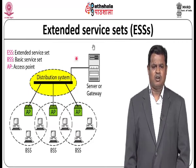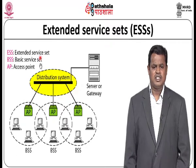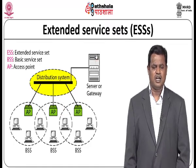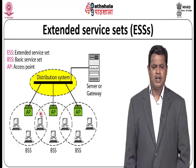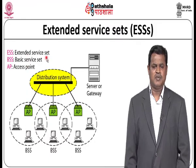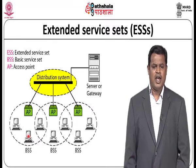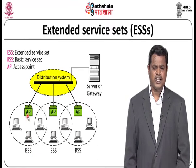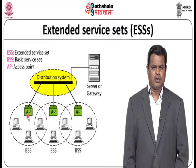There is another service set called the Extended Service Set or ESS. The basic service set is extended with the help of a distribution system, where there is a server for communication. Each circle represents a single BSS, and these single BSSs are interconnected via the extended service set ESS. For example, if a node in BSS 1 wants to communicate to BSS 2, that happens through the distribution system as well as the access point connected in the basic service set of the particular device.